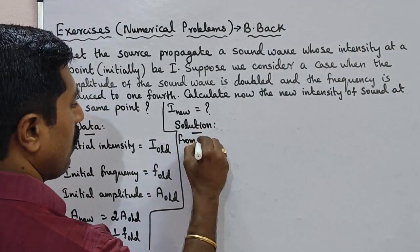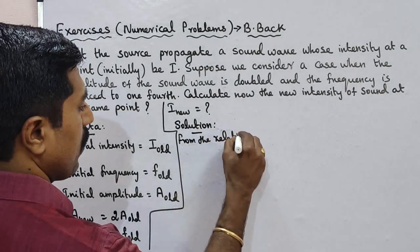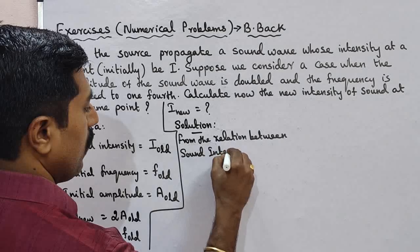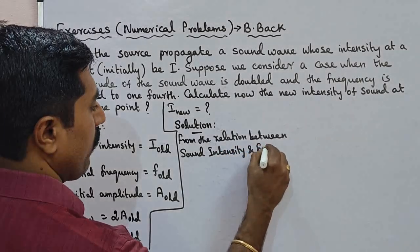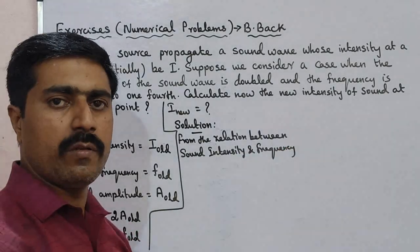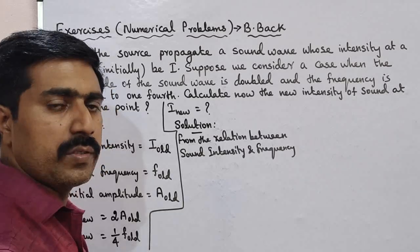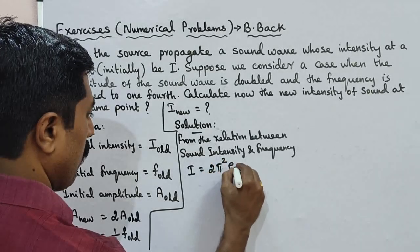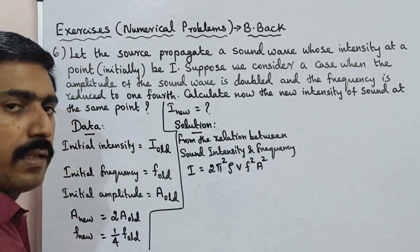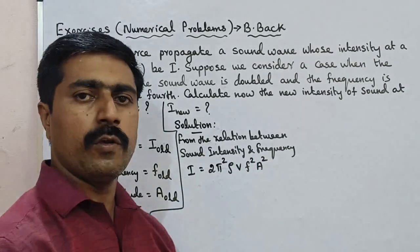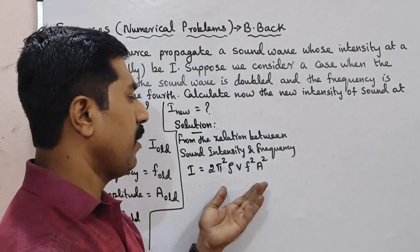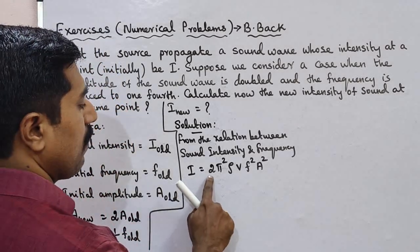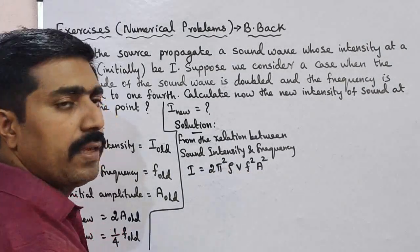From the relation between sound intensity and frequency, we need the formula. The formula — at college level — is: Intensity I equals 2π² ρ v f² A².